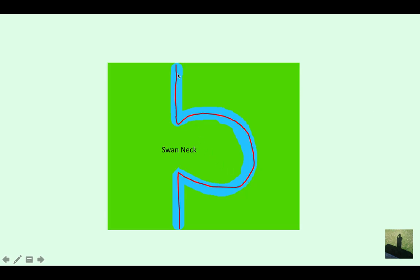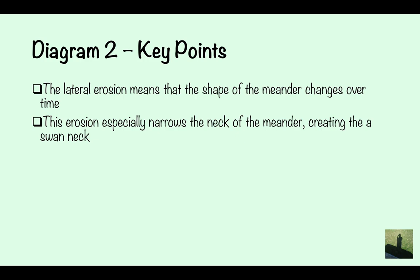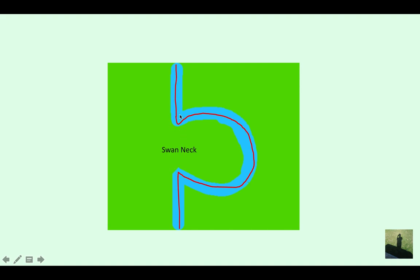Here's your second diagram that you're going to draw. Remember your annotations, guys. That's what's going to show the examiner what you're talking about in your text. If you include those annotations, just an extra layer to show the examiner. The key points here are that the lateral erosion means that the shape of the meander has changed over time. As you can see, the meander is a totally different shape. And it's changed over the period of this lateral erosion.